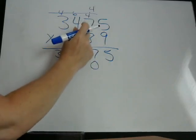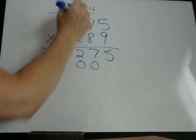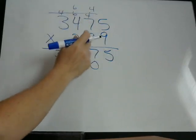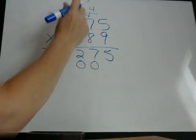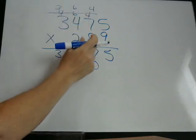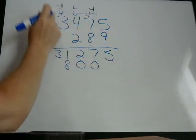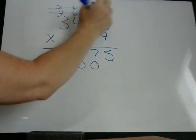8 times 7 is 56, plus 4 is 60. 60. 8 times 4 is 32, plus 6 is 38. 38. 8 times 3 is 24, plus 3 is 27. Cross these out.